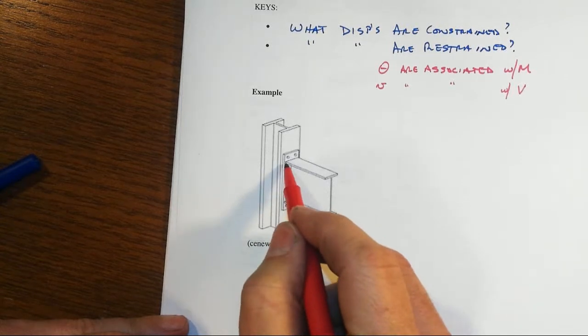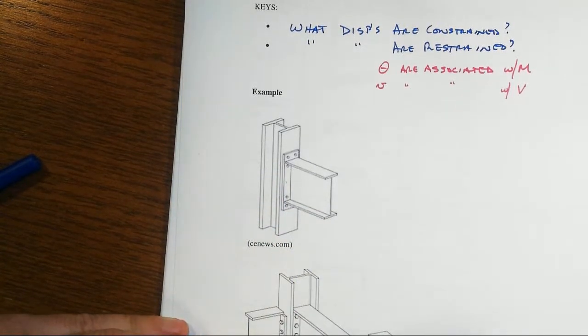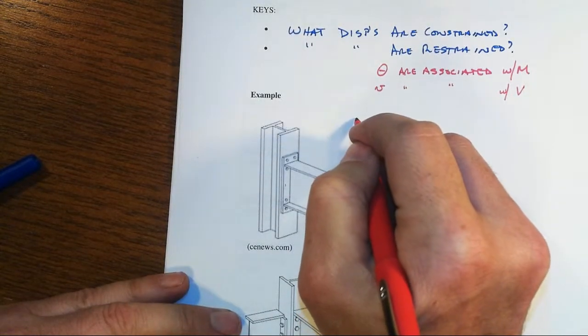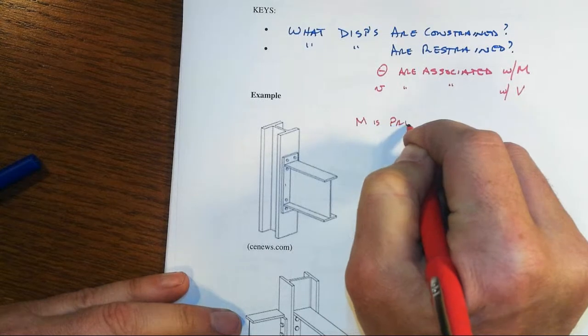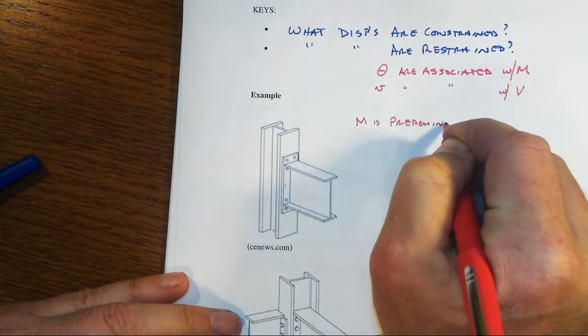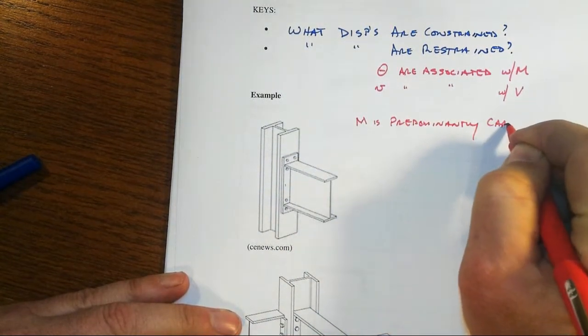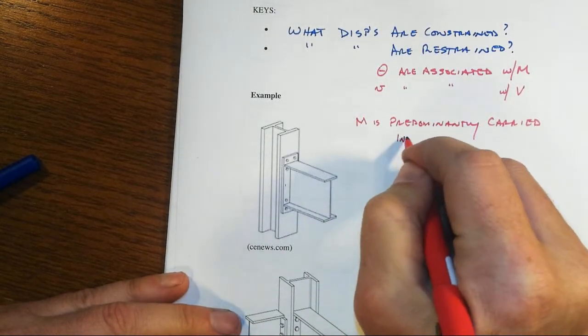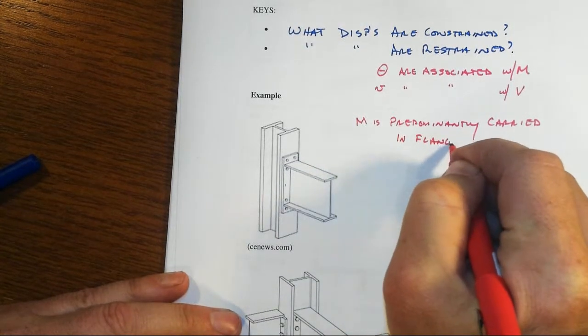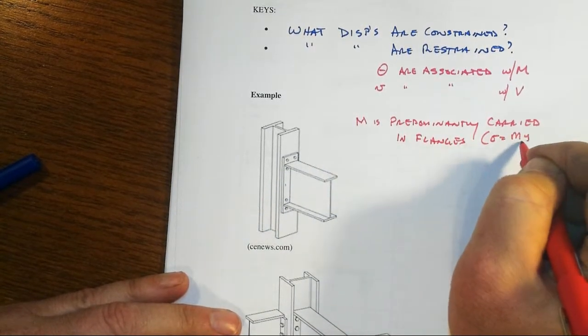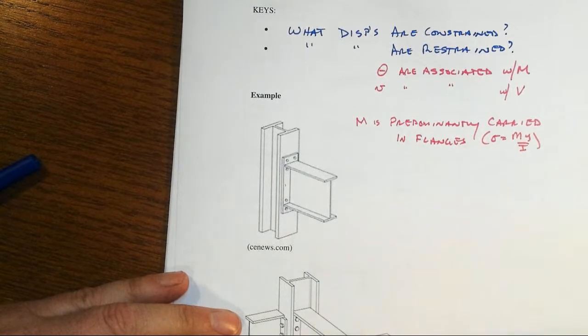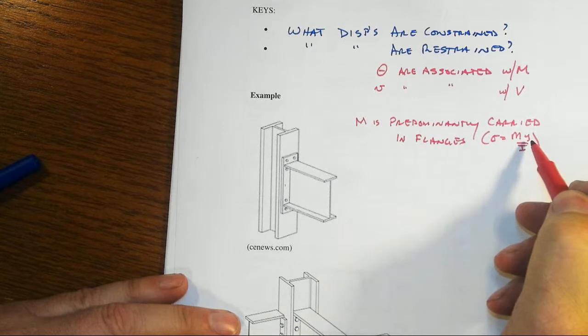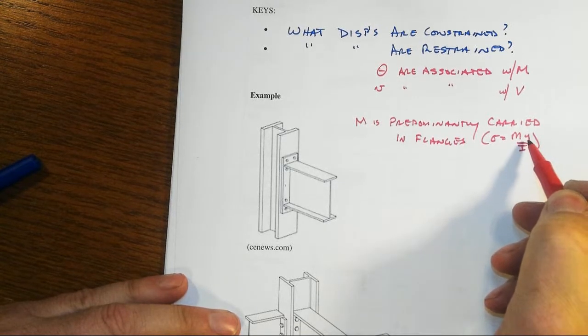And this end plate then is connected right where the flanges connect, to the column. So remember that the bending moment is predominantly carried where the stresses are highest, and that's going to be in the flanges. Sigma equals my over i, y is the distance away from the neutral axis, hence why some people don't like to use y for the symbol for the transverse displacement.